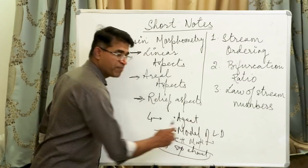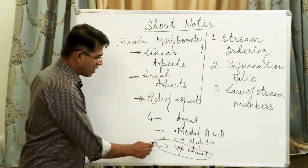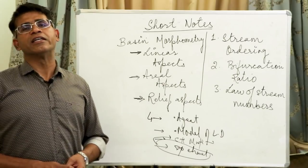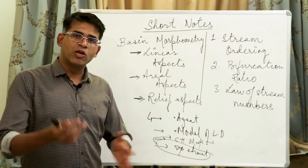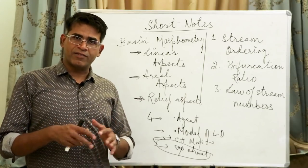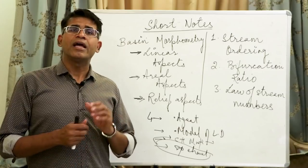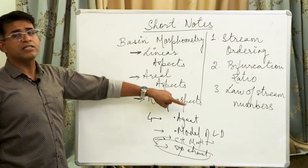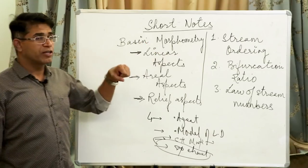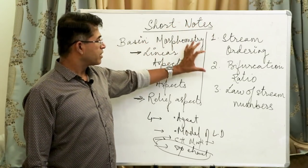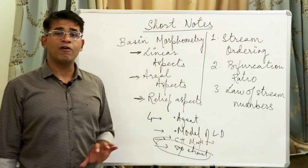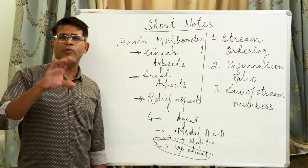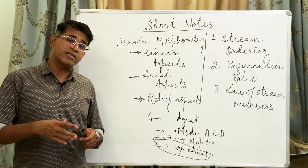Your syllabus mentions channel morphology, but I have a feeling that channel morphometry can also be important. One aspect of channel morphometry is studying rivers as part of a larger drainage basin. I have taken up a couple of terms: stream ordering, bifurcation ratio, and the law of stream numbers. This is just enough — probably for a 20 to 30-word short note — so that you don't get trapped in case they ask you.